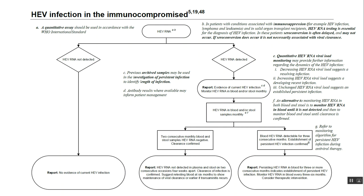Monitor HIV RNA in either blood or stool monthly. You can use previously archived samples to investigate persistent infection and identify the length of infection. Where serology is available, it can help in patient management. When testing HIV RNA every month in blood and/or stool, quantitative RNA viral load monitoring is very useful.